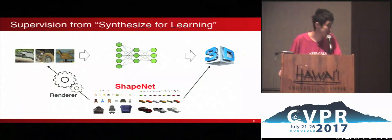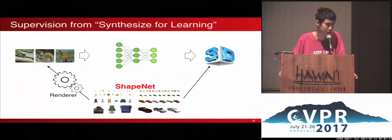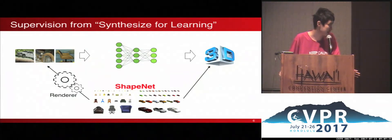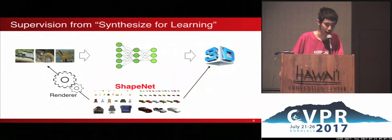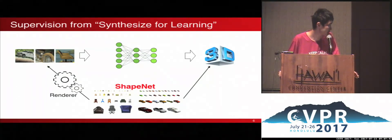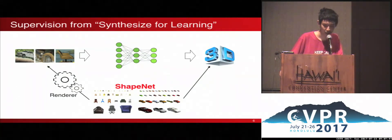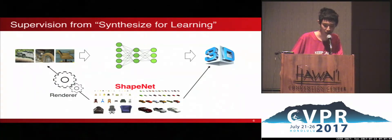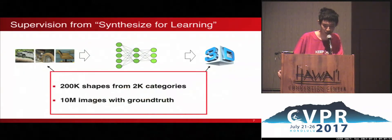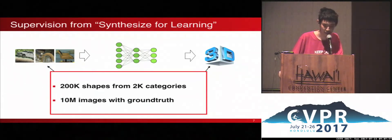This is what the system looks like. We build a large 3D object dataset called ShapeNet, and render from these object models some 2D images. A convolutional neural network is trained to predict from a single image what the 3D model should look like. The ShapeNet dataset contains 200,000 shapes across 2,000 categories, and from this we render 10 million images with ground truth.